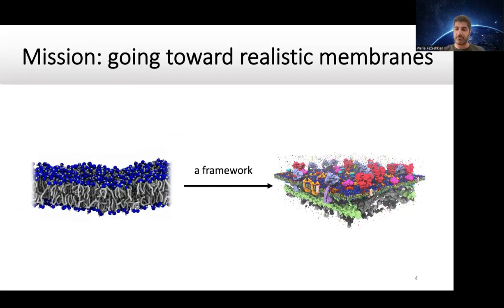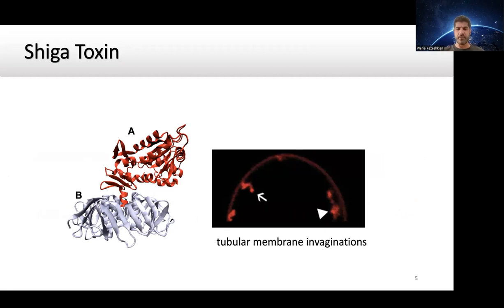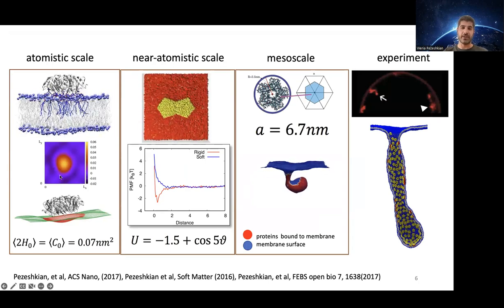As motivation: this is the Shiga toxin. It enters the cell through the B-subunit by binding to the cell plasma membrane. On a model membrane, it induces tubular membrane invagination. In a cell, the neck gets cut and it enters collectively. To understand this, we can use multiscale simulation techniques - using all-atom molecular dynamics simulations to see how individual proteins interact with the membrane, induce curvature, and how they cluster and interact with each other.